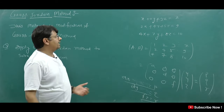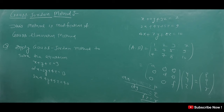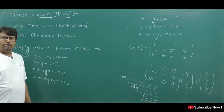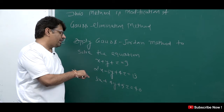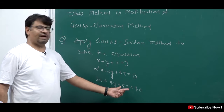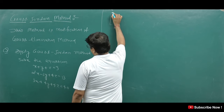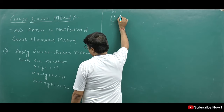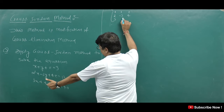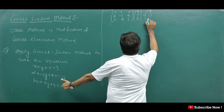Let me take an example. Apply the Gauss-Jordan Method to solve the system of equations: x plus y plus z is equal to 9; 2x minus 3y plus 4z is equal to 13; and 3x plus 4y plus 5z is equal to 40. We write the augmented matrix with rows: [1, 1, 1 | 9]; [2, -3, 4 | 13]; and [3, 4, 5 | 40].